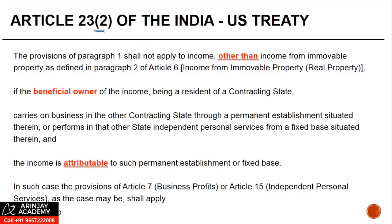Article 23(2), which in many treaties is Article 21(2), of the India-US treaty deals with the case where a non-resident has a PE in India and there is some income falling under the 'other income' clause. The provisions of paragraph 1 shall not apply to income other than income from immovable property as defined in paragraph 2 of Article 6.